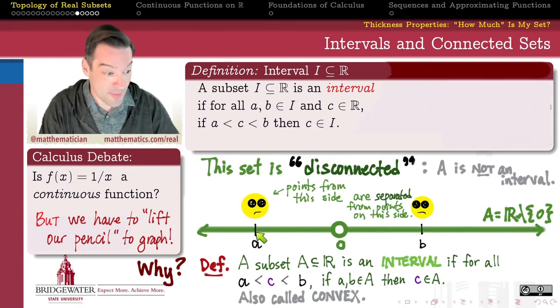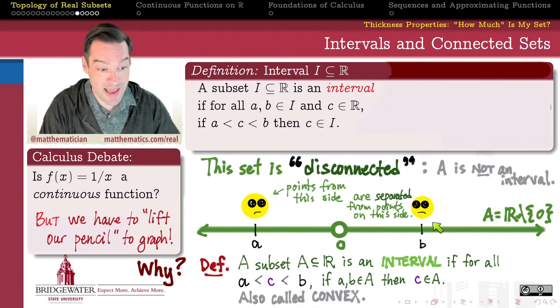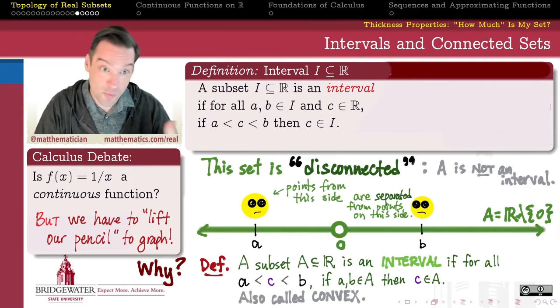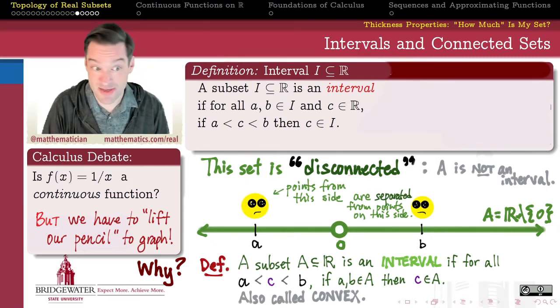Because, for example, my set includes the number negative one and it includes the number positive one, but it does not include the number zero which lies in between them. So this set is not an interval, and that's one of the reasons why we might say that this is a disconnected set.